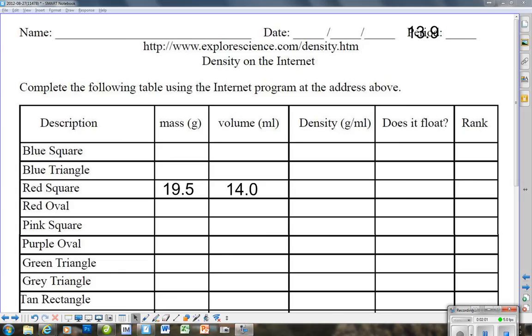Now you take out your calculator and you divide 19.5, which is sitting here in the mass column, by the volume which is 14.0. The number that you'll get on your calculator when you round it to the right number of sig figs, which is three, is going to be 13.9.